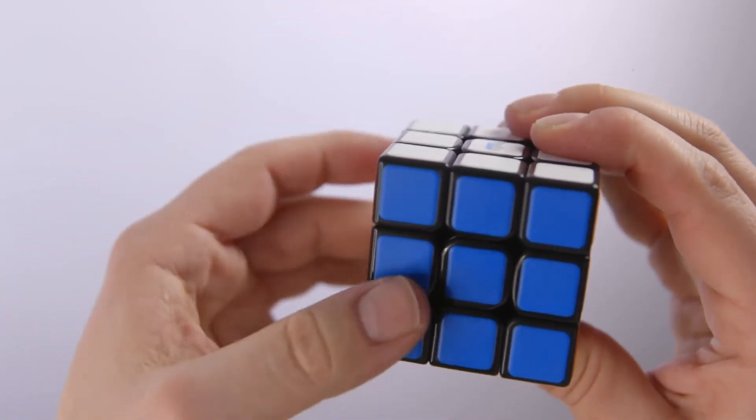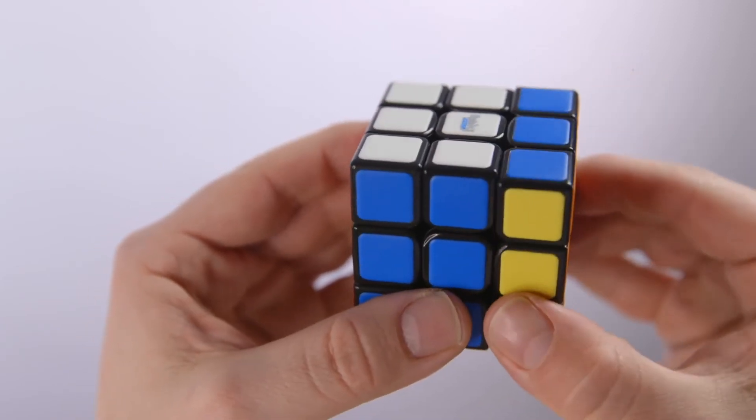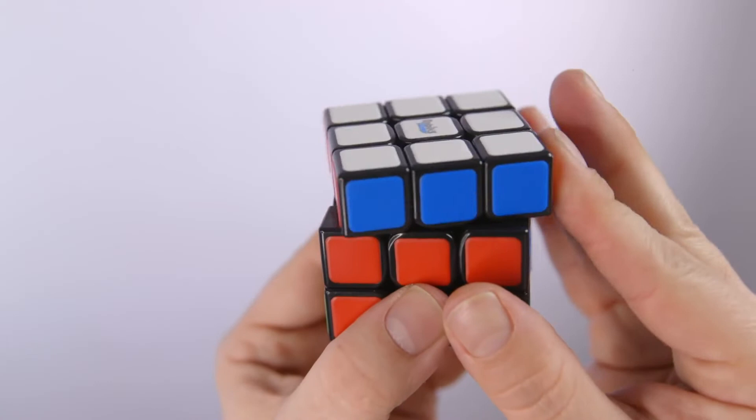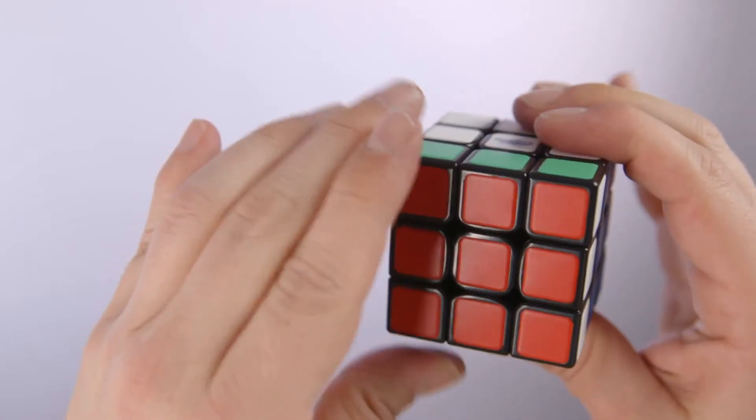Each move is a quarter turn. So if I say right up, move the right side up once. Simple enough. The top and the face move clockwise and anti-clockwise. They are easy to see.